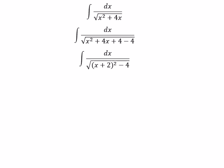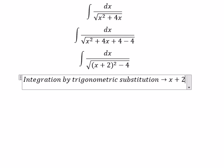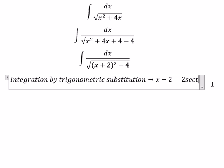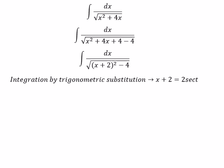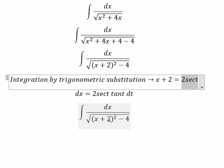Now we need to use integration by trigonometric substitution. So we will have x+2 equal to 2sec(t). Later we get dx equal to 2sec(t)tan(t)dt. So this one we can put in here.